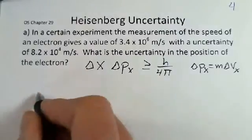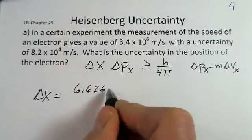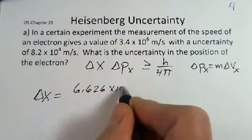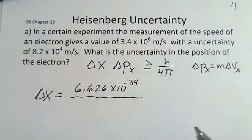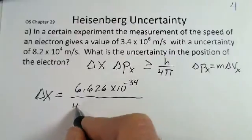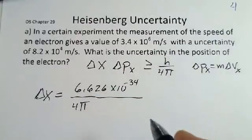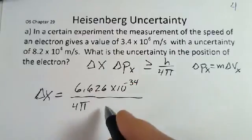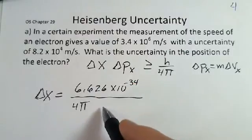So delta x, Planck's constant, 6.626, 10 to the minus 34 in standard metric units. We have to divide by 4 pi. And I'm dividing by the uncertainty in the momentum on both sides. So the delta px comes to the denominator over on the right side.